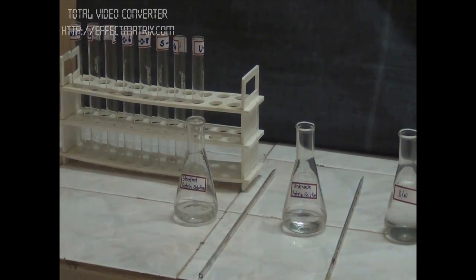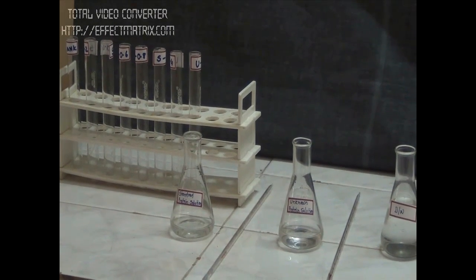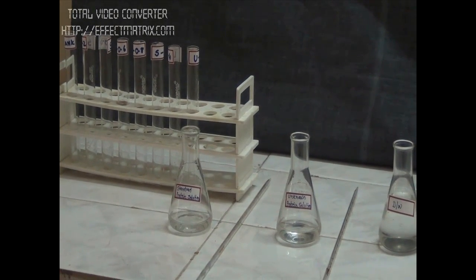First we will prepare a series of standard solution and unknown solution. The first tube is a blank tube in which we will add 1 ml of distilled water. In the second tube, we will add 0.2 ml of standard protein. In the third tube, we will add 0.4 ml of standard protein.